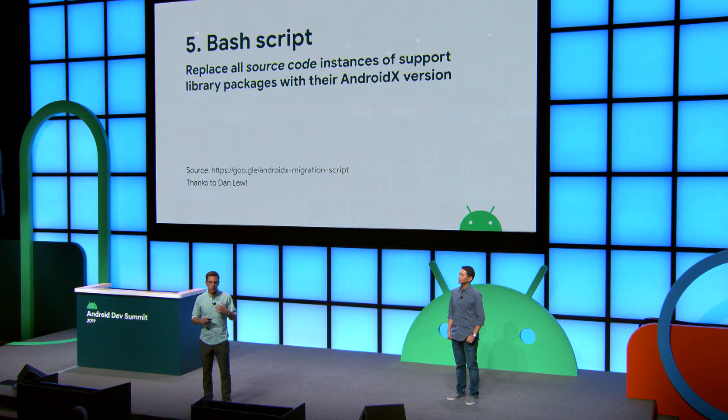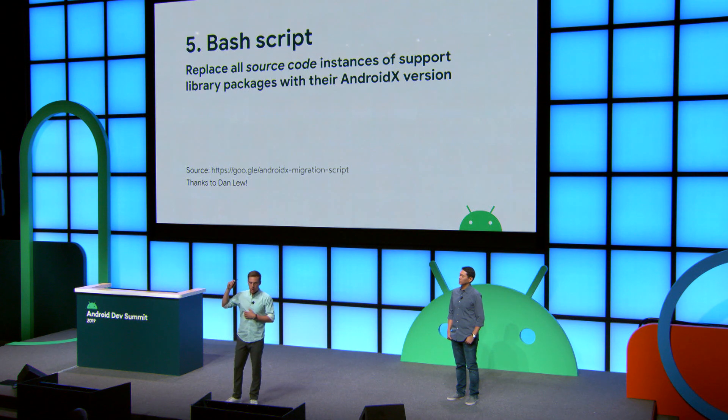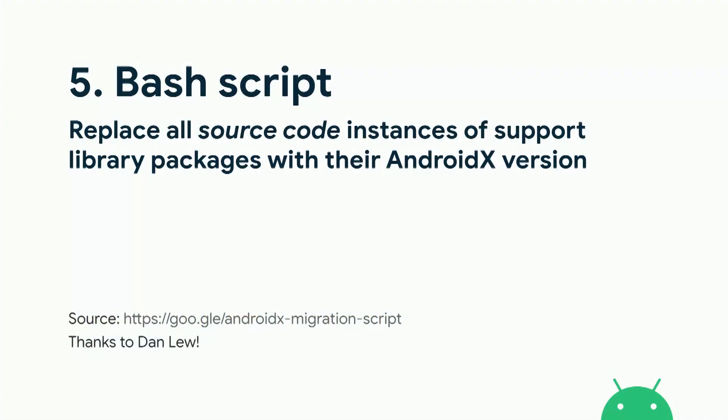That leaves you with two options for migrating the source code itself. One option is to use a bash script using grep and sed. We want a special thanks to Dan Liu for this. You can follow the golink gol.gle/AndroidX Migration Scripts, which links to the GitHub source page where you can see the script as well as more community contributions.